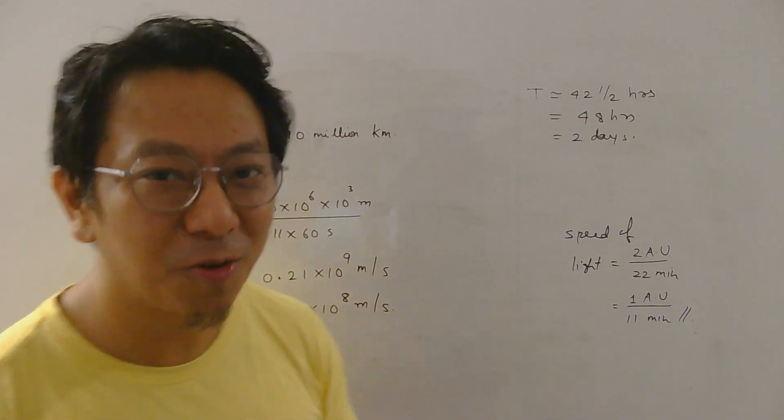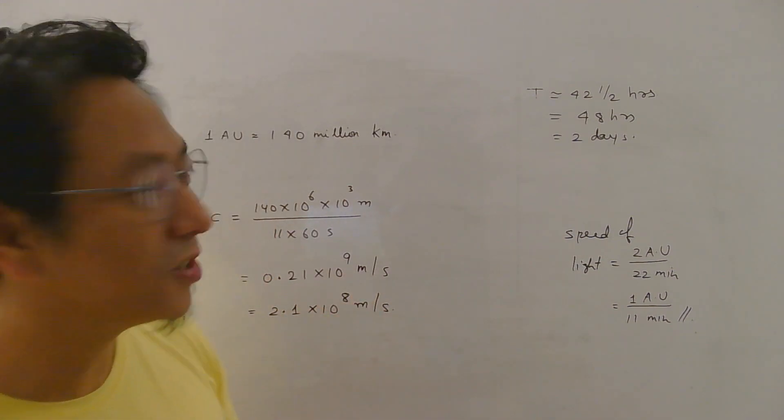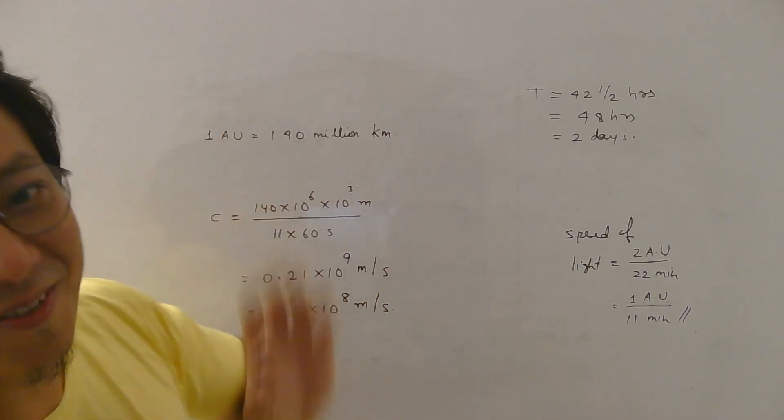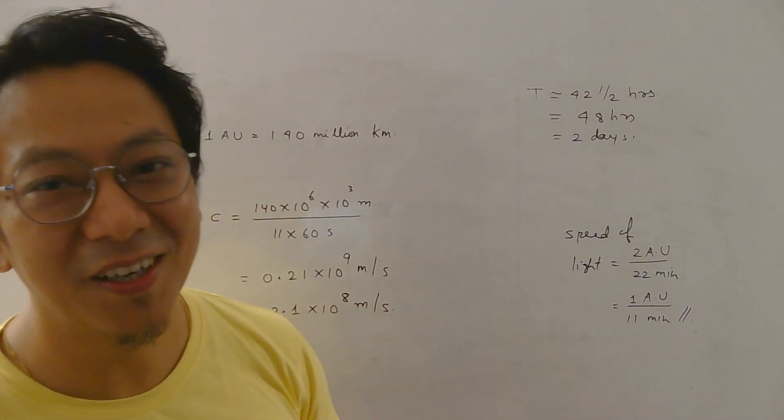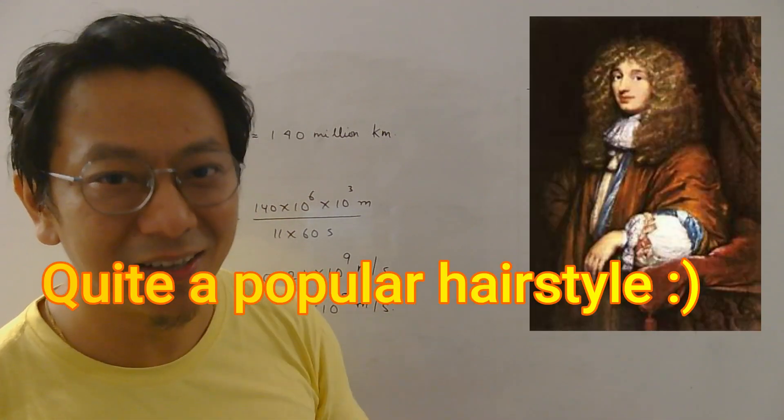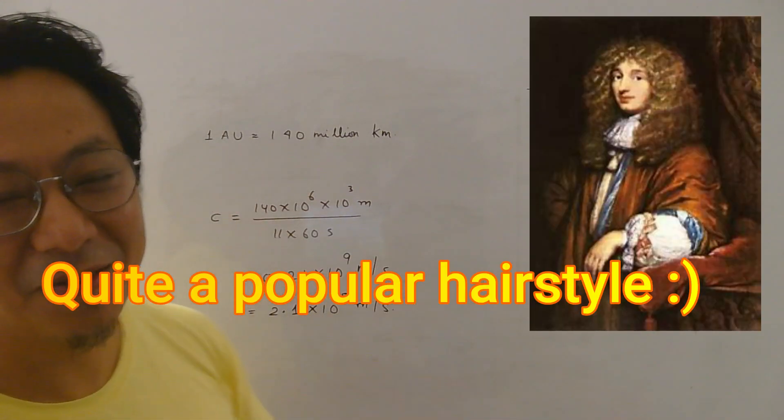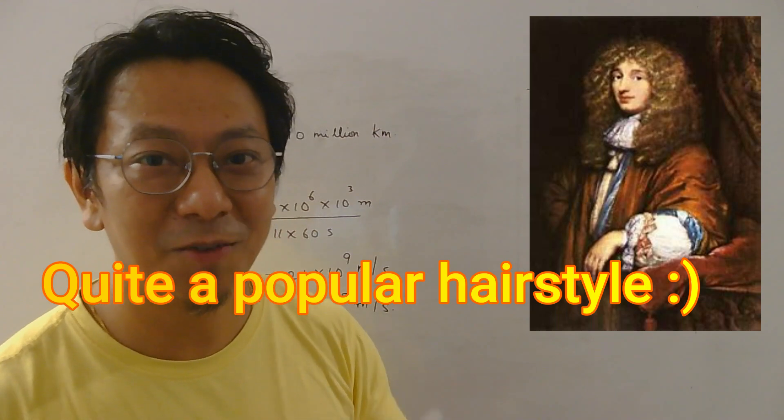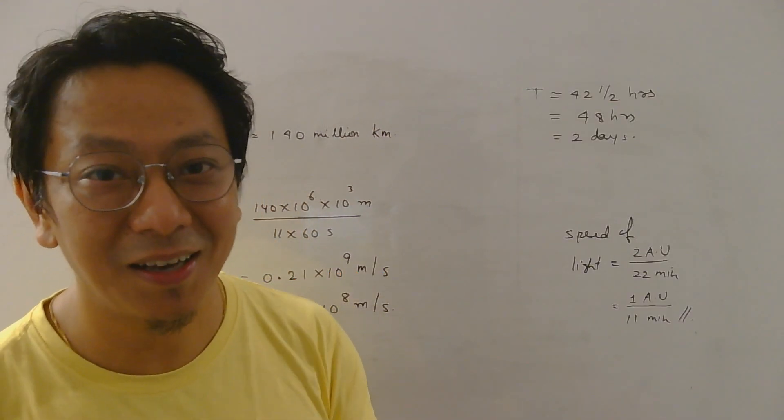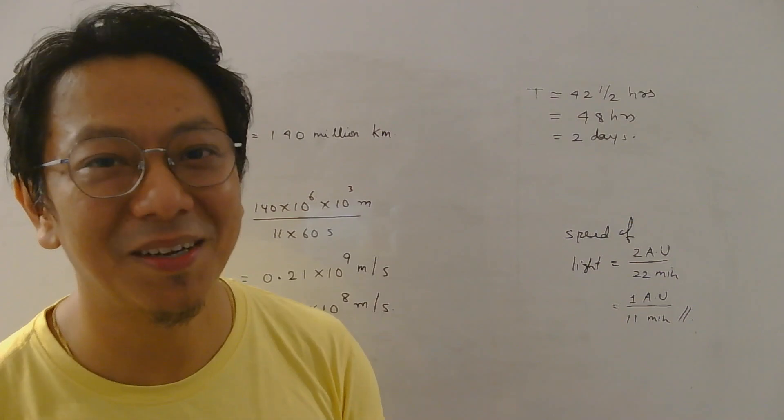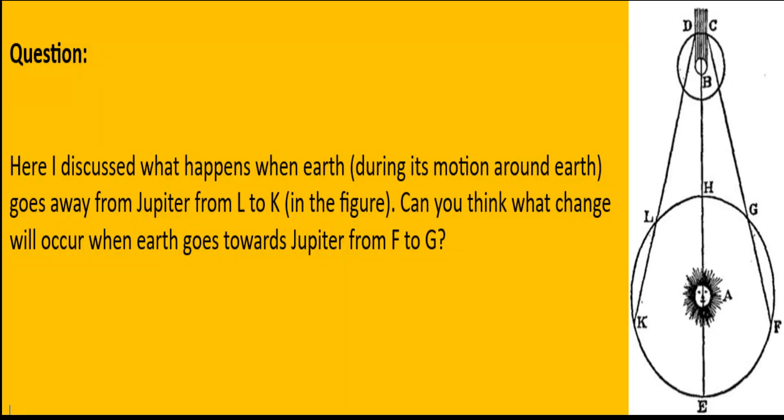Now it is believed that Romer never did this calculation because he did not trust this value of one astronomical unit. So it was actually Huygens who did this calculation part. But remember, it was Romer who proved to the world that light has a finite speed. So this is a very important thing.